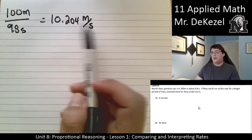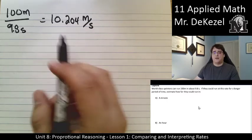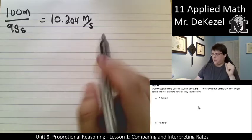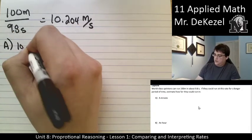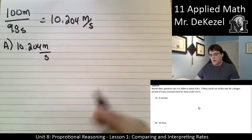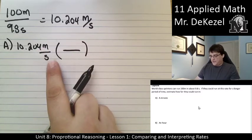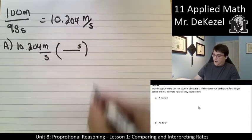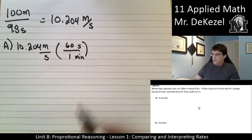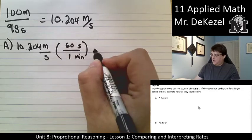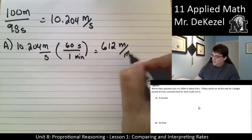The sprinter runs 100 meters in 9.8 seconds — that's not a unit rate. We want to get the bottom number to be one, so I divide 100 by 9.8 seconds to get 10.204 meters per second. Now I have a unit rate I can use more easily because I know how many seconds are in a minute — it's 60. So I take 10.204 meters per second and multiply by 60 seconds per minute to get 612 meters per minute.